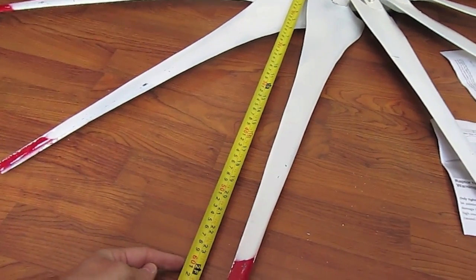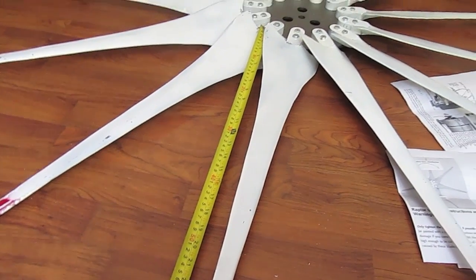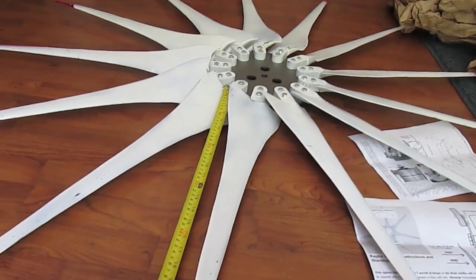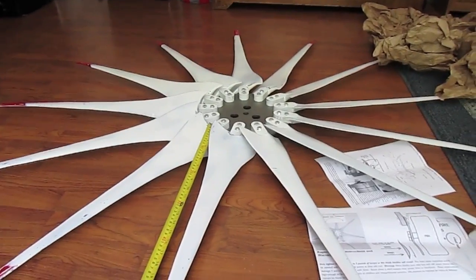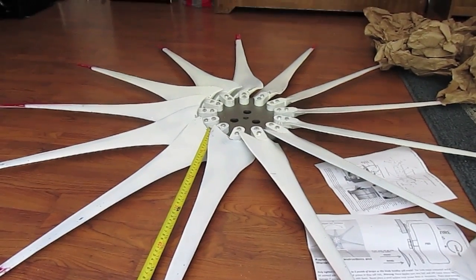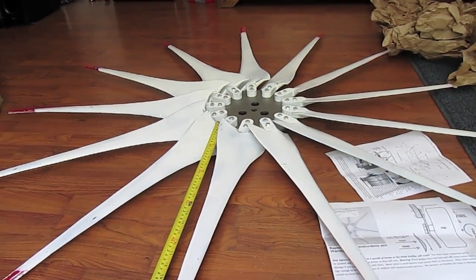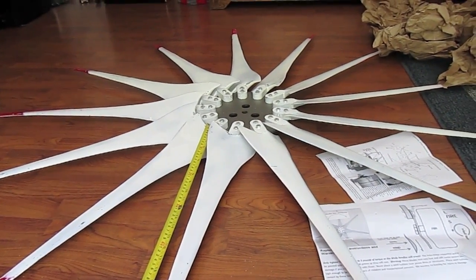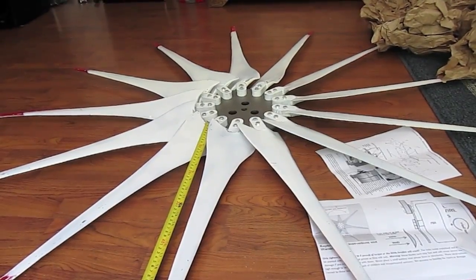You can see this is up to two feet. So we've got at least four foot, over a four-foot wingspan, I guess you'd say. So next, we're going to be into mounting this on the PMA and mounting the PMA to the bracket.